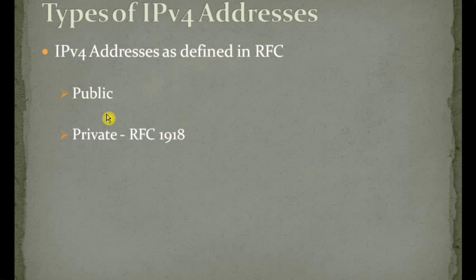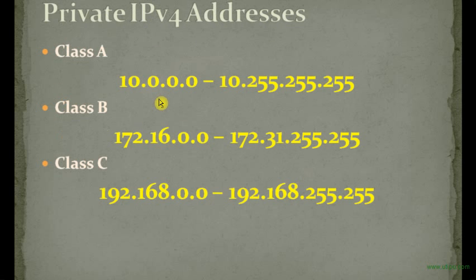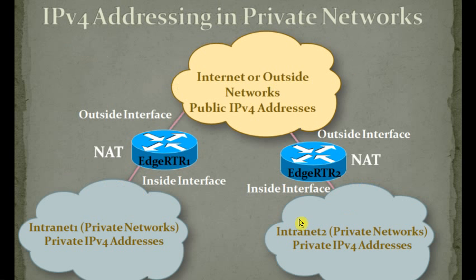Public IP addresses are those allowed on the internet, used to communicate through it. They must be unique — each organization or entity communicating through the internet needs unique IP addresses. It may have a pool of public IPv4 addresses, but every address used must be unique. The private IPv4 address ranges as defined in RFC 1918 are: for Class A, 10.0.0.0 to 10.255.255.255; for Class B, 172.16.0.0 to 172.31.255.255; and for Class C, 192.168.0.0 to 192.168.255.255.